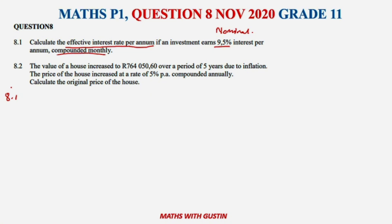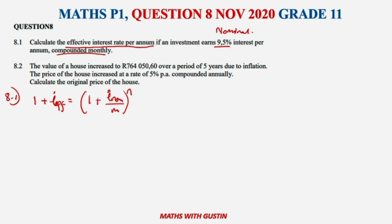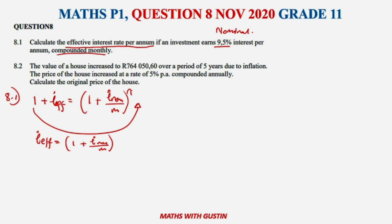For 8.1, we know the formula used to calculate effective interest: 1 plus i_effective equals 1 plus i_nominal over m, all to the power of m. Before we substitute, we take this to the other side: i_effective equals 1 plus i_nominal over m, all to the power of m, minus 1. They already told us it's compounded monthly.